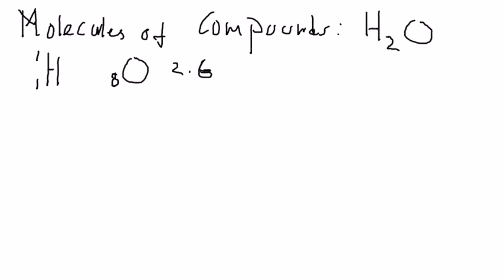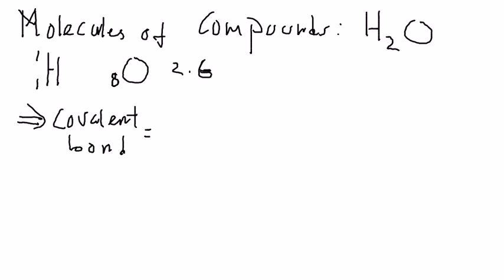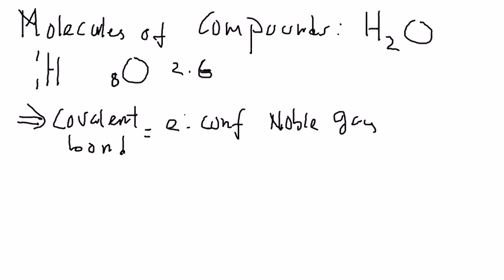Let's recap quickly: what is the purpose of forming covalent bonding or sharing of electrons? The purpose of covalent bonding is to achieve the electronic configuration of a noble gas. There are two types: one is called duplet — meaning the shell has a maximum of two electrons — and the other is called octet.